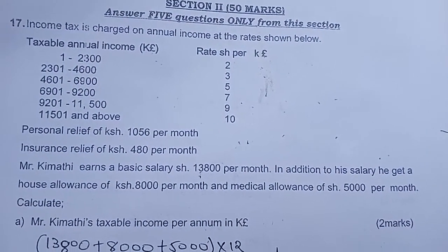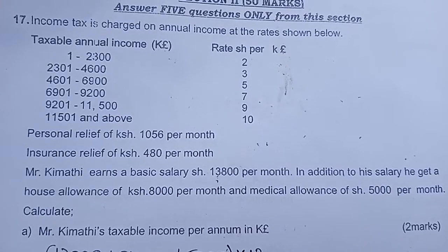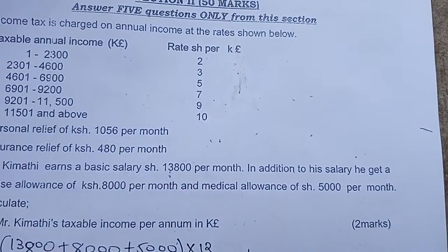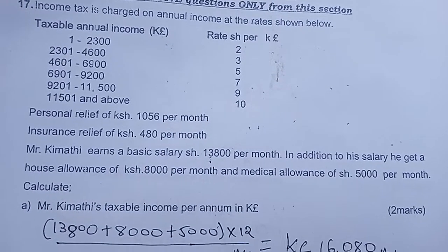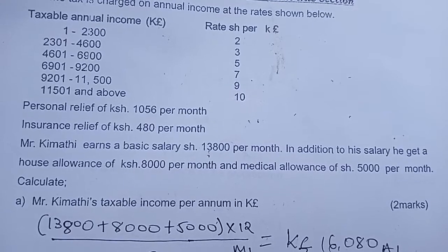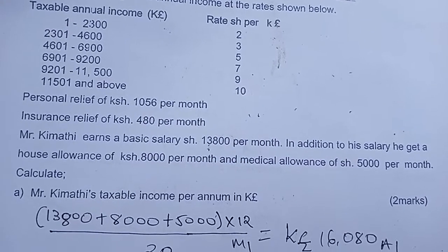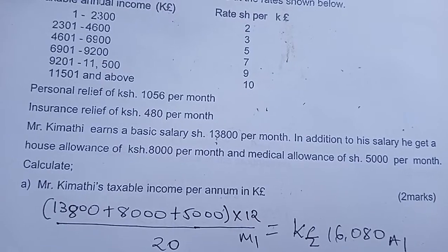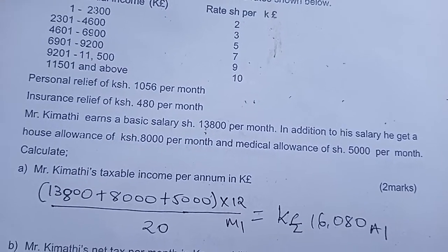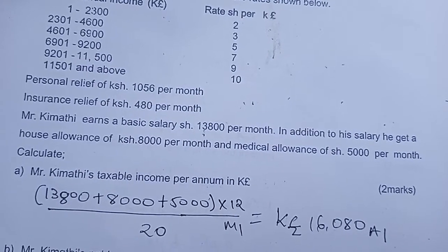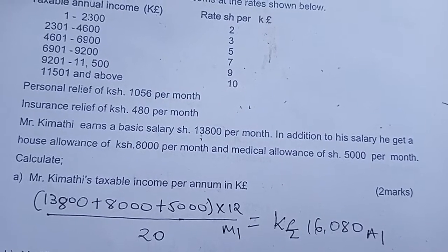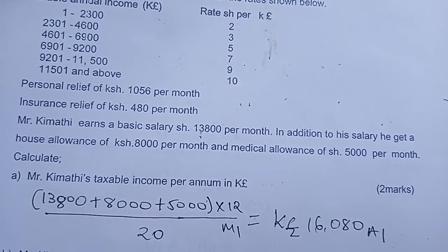Mr. Kimati earns a basic salary of 13,800 shillings per month. In addition to his salary, he gets a house allowance of 8,010 shillings per month and a medical allowance of 5,000 per month. We are asked to calculate Mr. Kimati's taxable income per month in Kenya pounds.